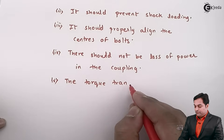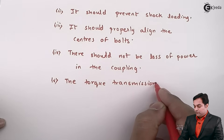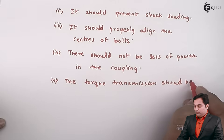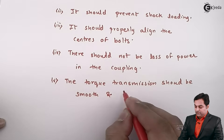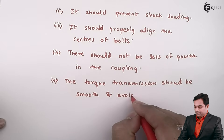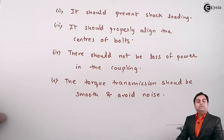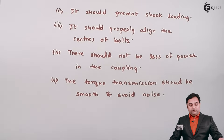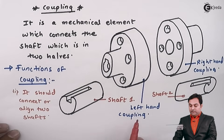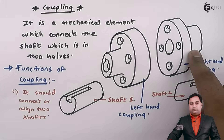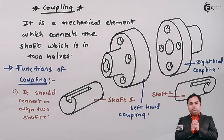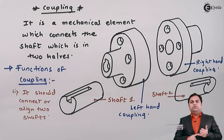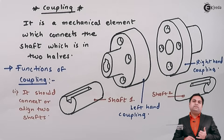Finally, the torque transmission should be smooth and avoid noise — the coupling should operate in a smooth and silent manner. Since the entire unit, shaft one, left hand coupling, shaft two, and right hand coupling, all rotate together, the coupling should operate with noise kept to a minimum level.